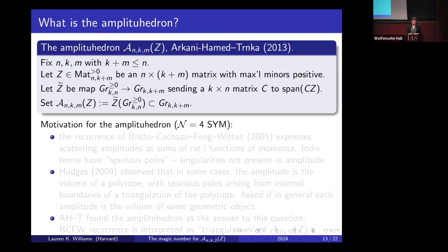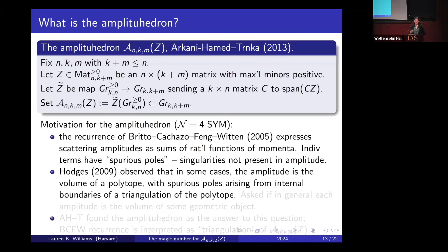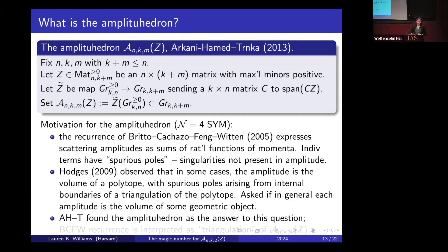The motivation came from giving a geometric interpretation of the BCFW recurrence, inspired by Hodges's observation that in some cases the amplitude could be interpreted as the volume of a polytope, with spurious poles arising from internal boundaries of a triangulation. Arkani-Hamed and Trnka found the amplituhedron answers this question more generally, with the BCFW recurrence interpreted as a triangulation or tiling of the amplituhedron — particularly for m equals 4.